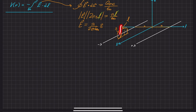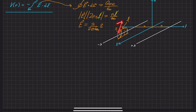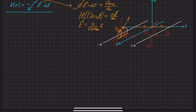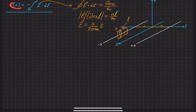The electric field points in the S-hat direction, radially away from the line charge. If we plug in negative lambda for the negative line charge, the field points inward; for positive lambda it points outward. Now that we have the electric field, we can put it into our potential expression.